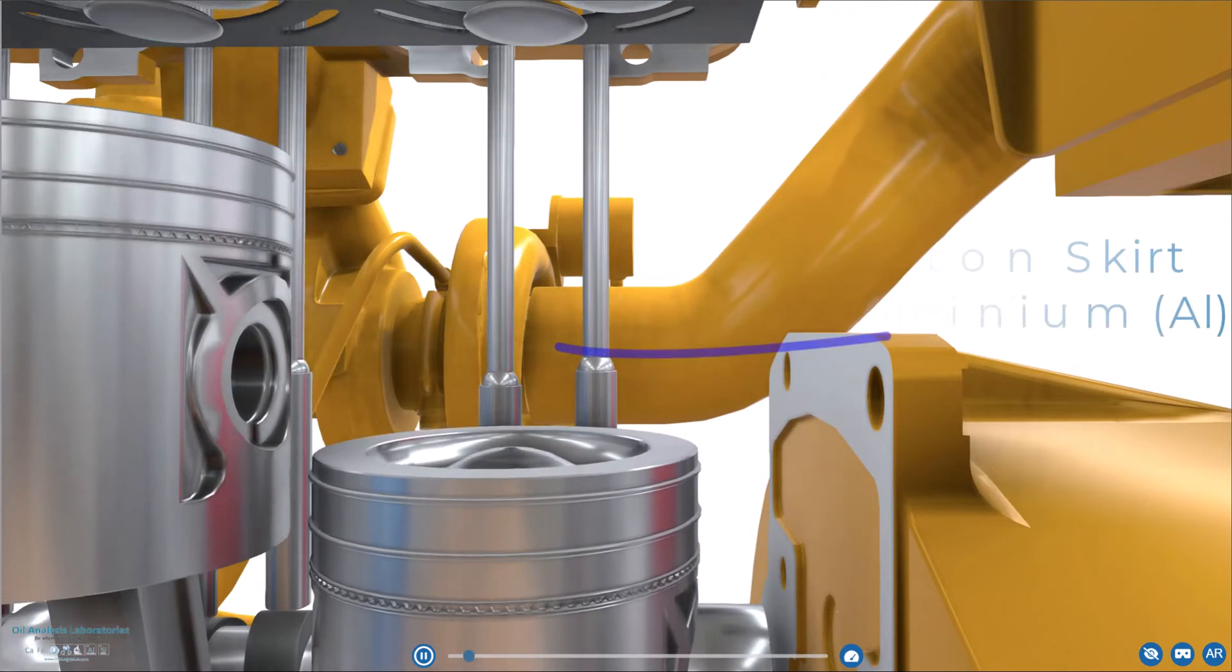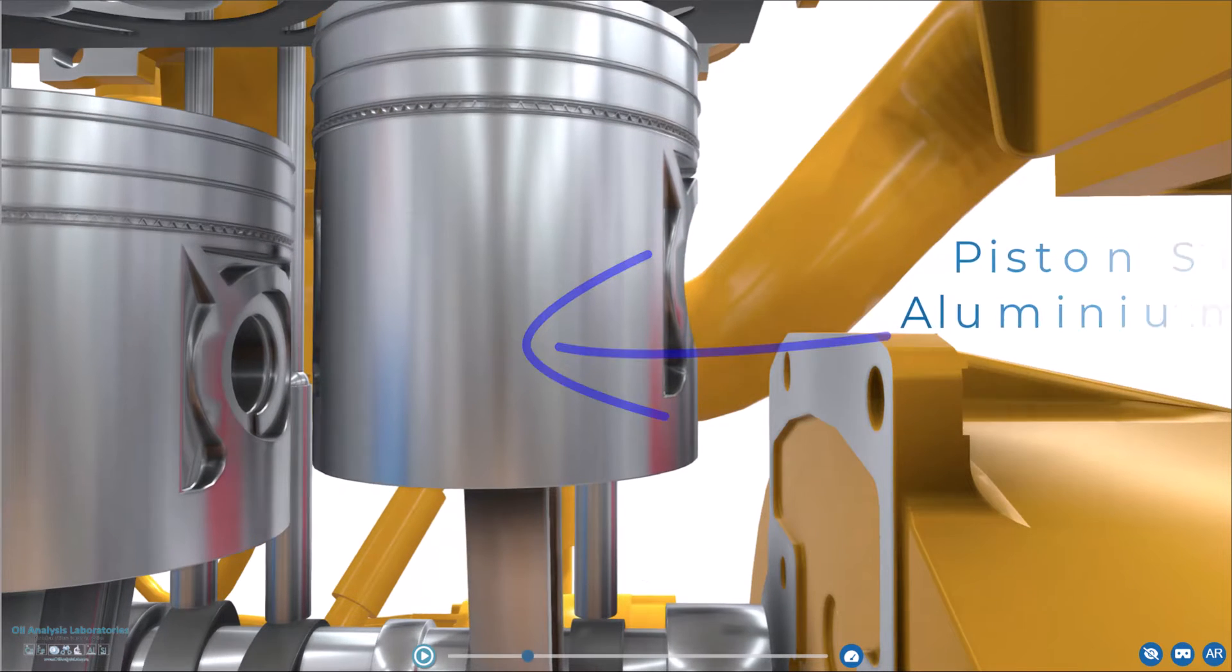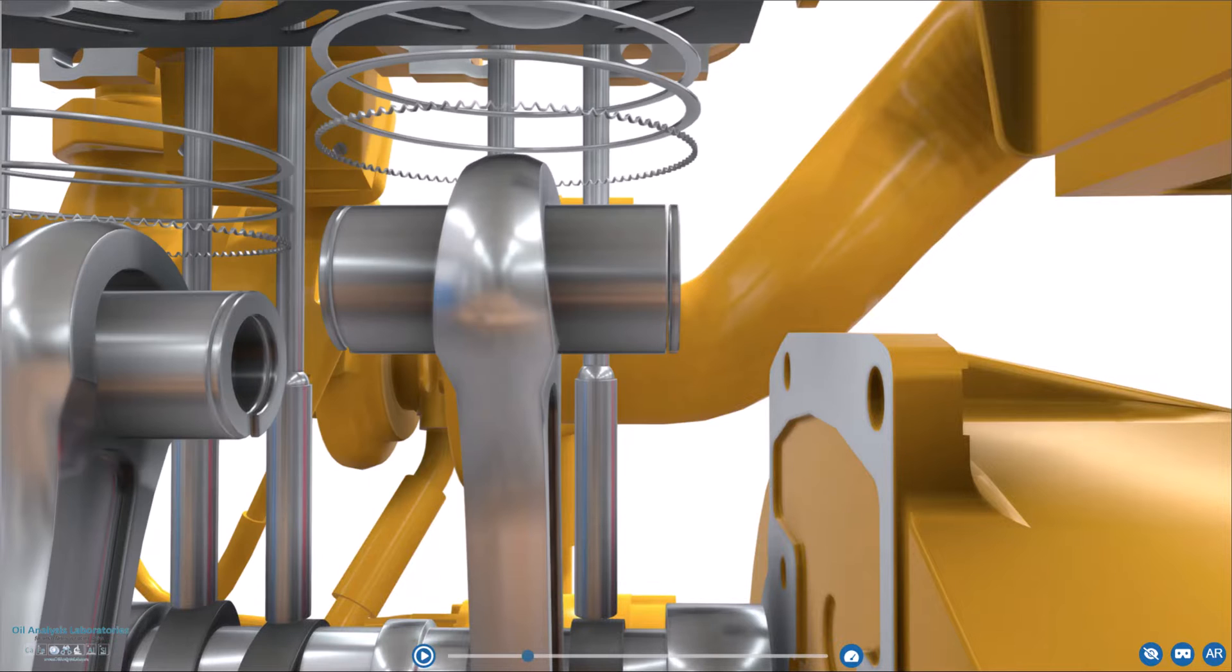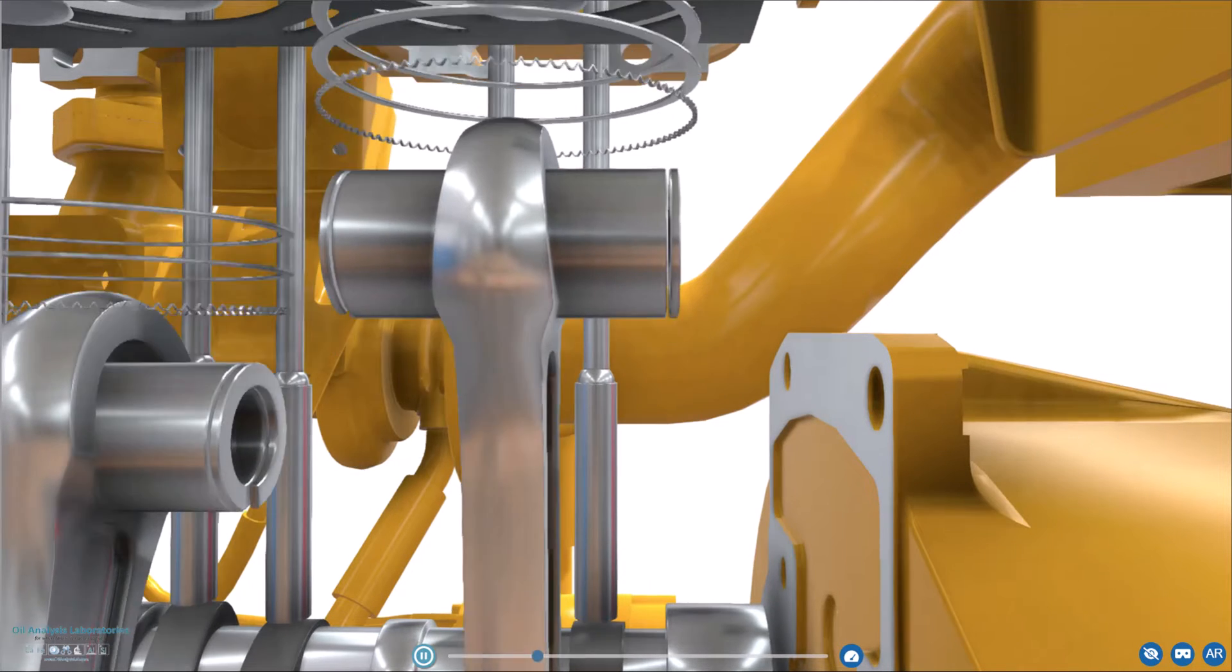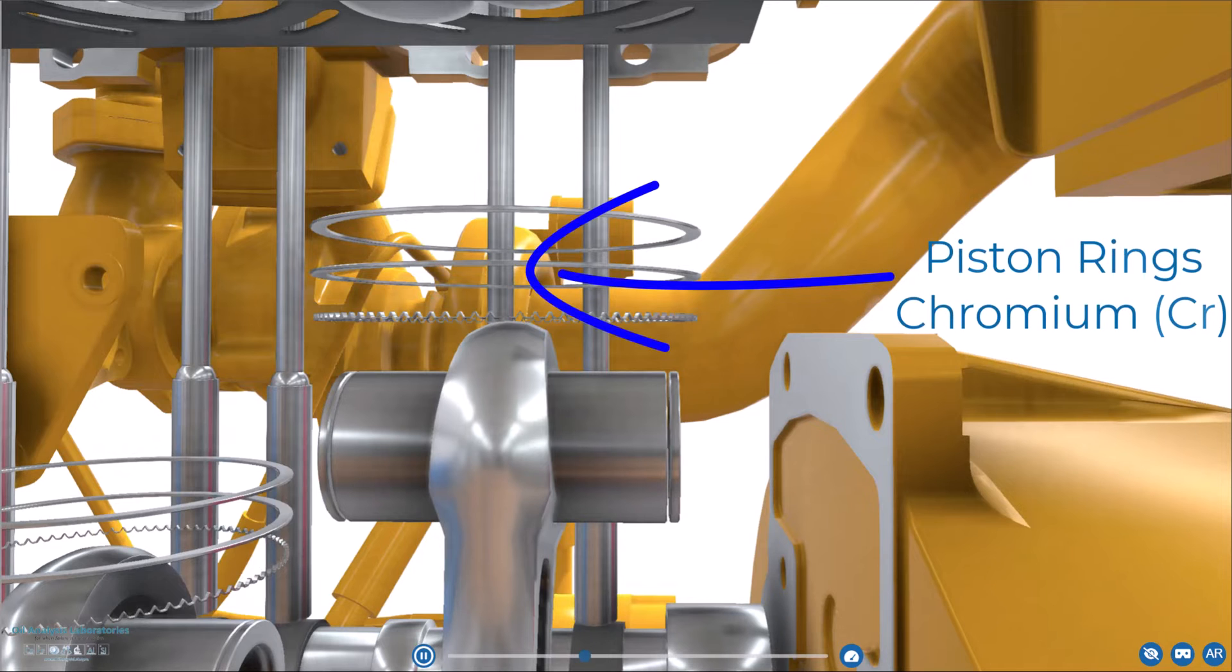So we come down a bit and we have the nice shiny piston scope made of aluminium. We also have the piston rings made of chromium and sometimes molybdenum too, but molybdenum can also be an oil additive so it's harder to spot as ring wear.